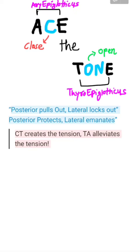The last mnemonic: 'CT creates tension and TA alleviates.' CT stands for cricothyroid and TA stands for thyroarytenoid. So cricothyroid is the tensor muscle of the larynx and thyroarytenoid is the relaxer.